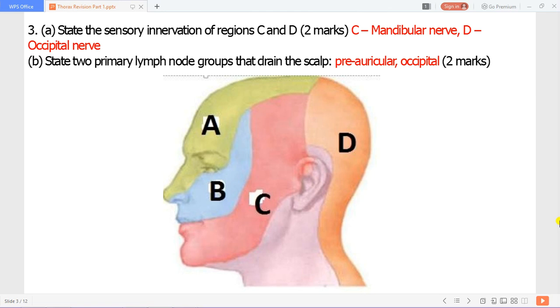Sensory innervation to the regions labeled C and D - you have the mandibular nerve and the occipital nerve. Primary lymph nodes that drain the scalp include the preauricular and the occipital.